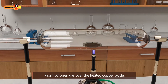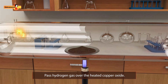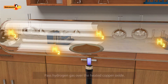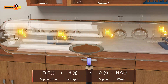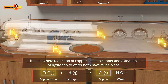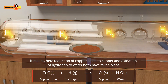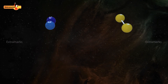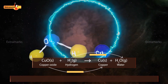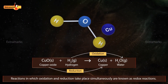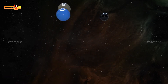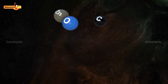Let us now pass hydrogen gas over the heated copper oxide. Notice, copper oxide is now converted into copper. During the reaction, copper oxide loses oxygen and hydrogen gains oxygen. It means here reduction of copper oxide to copper and oxidation of hydrogen to water both have taken place. So we can conclude that sometimes both oxidation and reduction reactions take place simultaneously. These types of reactions are known as redox reactions.